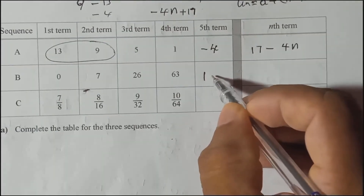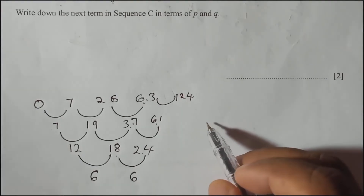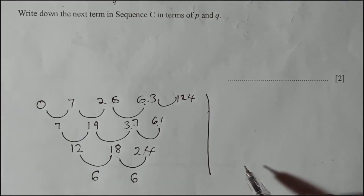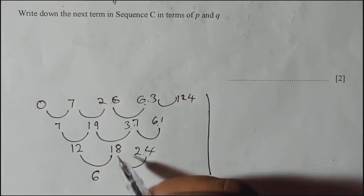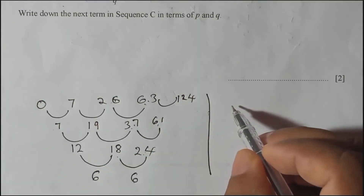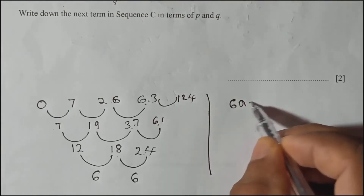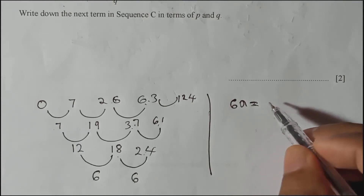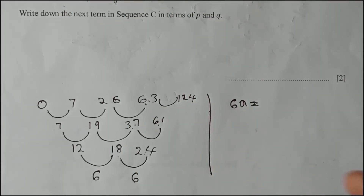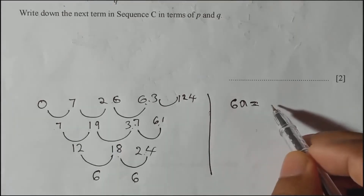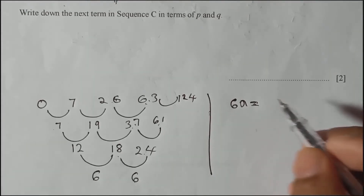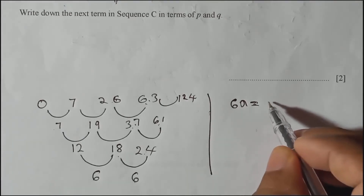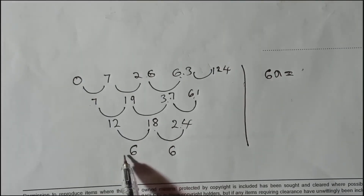Now we need to find the nth term. To find the nth term here, we need to remember some formulas. This is a cubic sequence, so you need to remember four formulas. The first one: 6a equals the first term of the third difference.